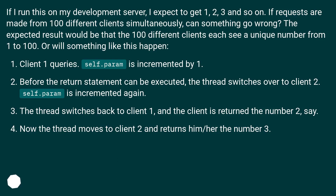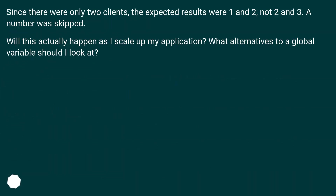Client 1 queries. self.param is incremented by 1. Before the return statement can be executed, the thread switches over to client 2. self.param is incremented again. The thread switches back to client 1, and the client has returned the number 2, say. Now the thread moves to client 2 and returns the number 3. Since there were only 2 clients, the expected results were 1 and 2, not 2 and 3. A number was skipped. Will this actually happen as I scale up my application? What alternatives to a global variable should I look at?